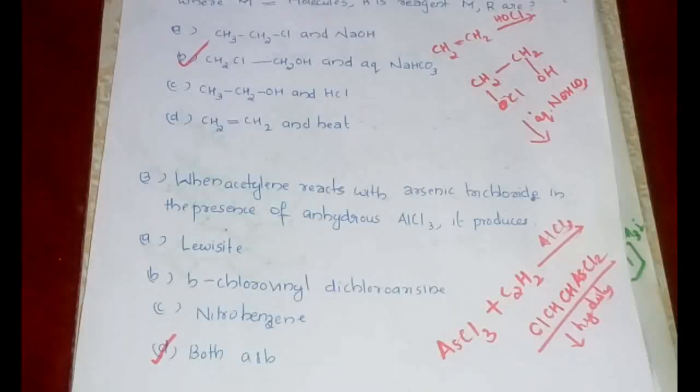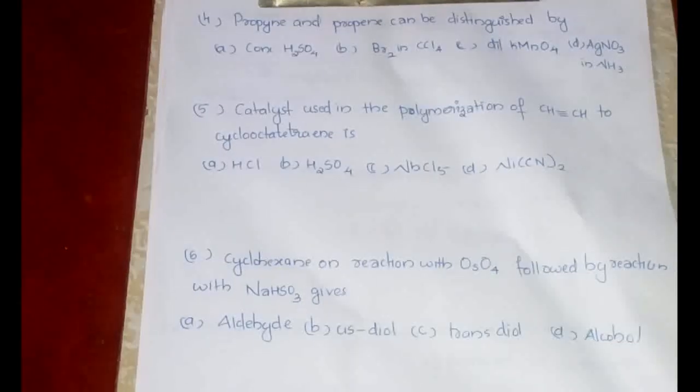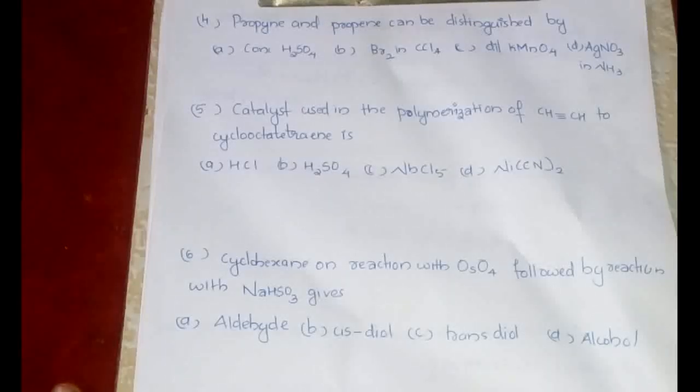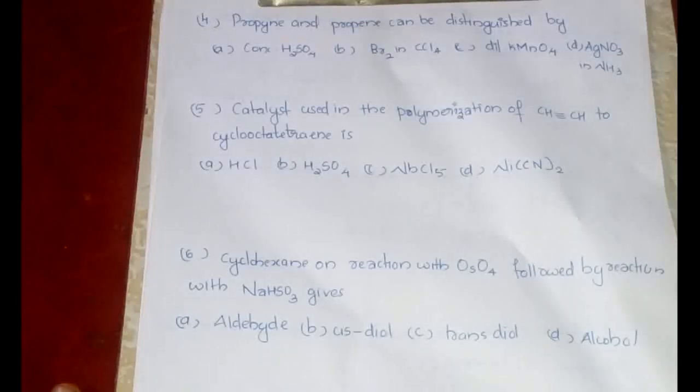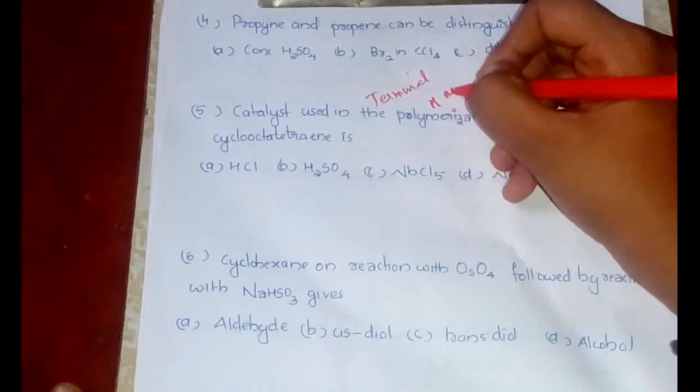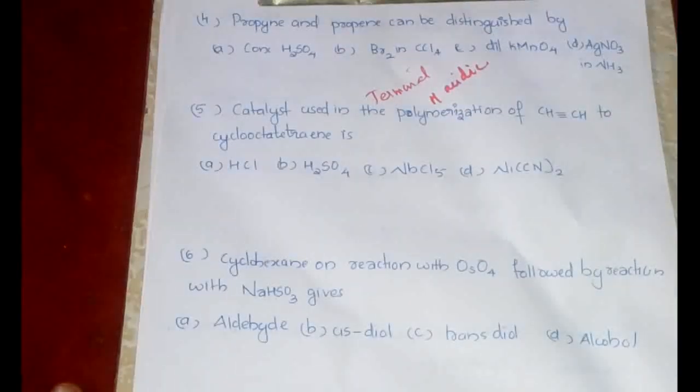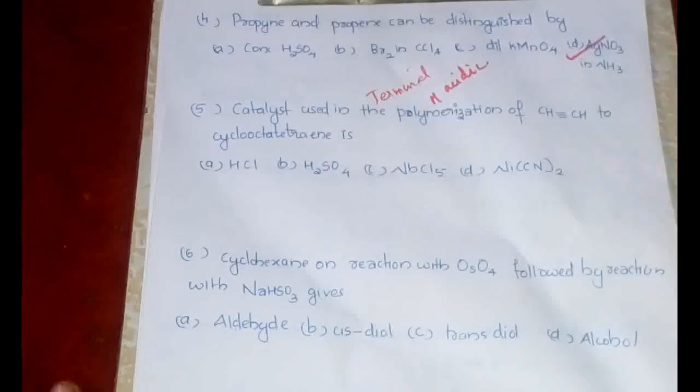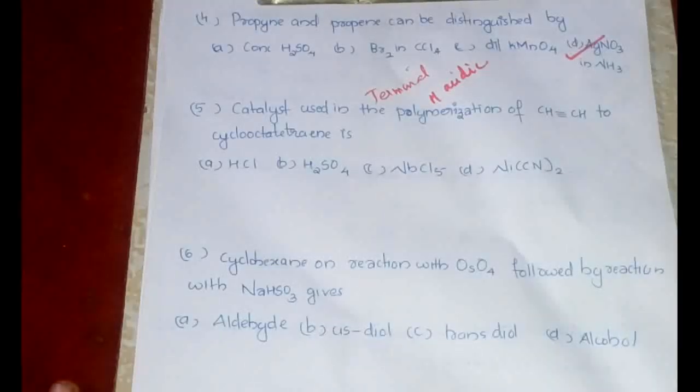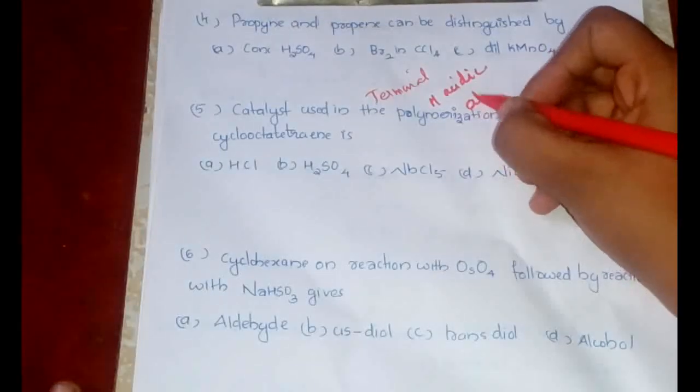Now we'll go to the fourth question. Propyne and propene can be distinguished by concentrated H2SO4, Br2 in CCl4, dilute KMnO4. All these are not very useful for distinguishing alkyne and alkene because both are unsaturated compounds, but there is a difference: an alkyne is having terminal hydrogen which is acidic. Therefore, this acidic terminal hydrogen will be reacting with ammoniacal AgNO3.